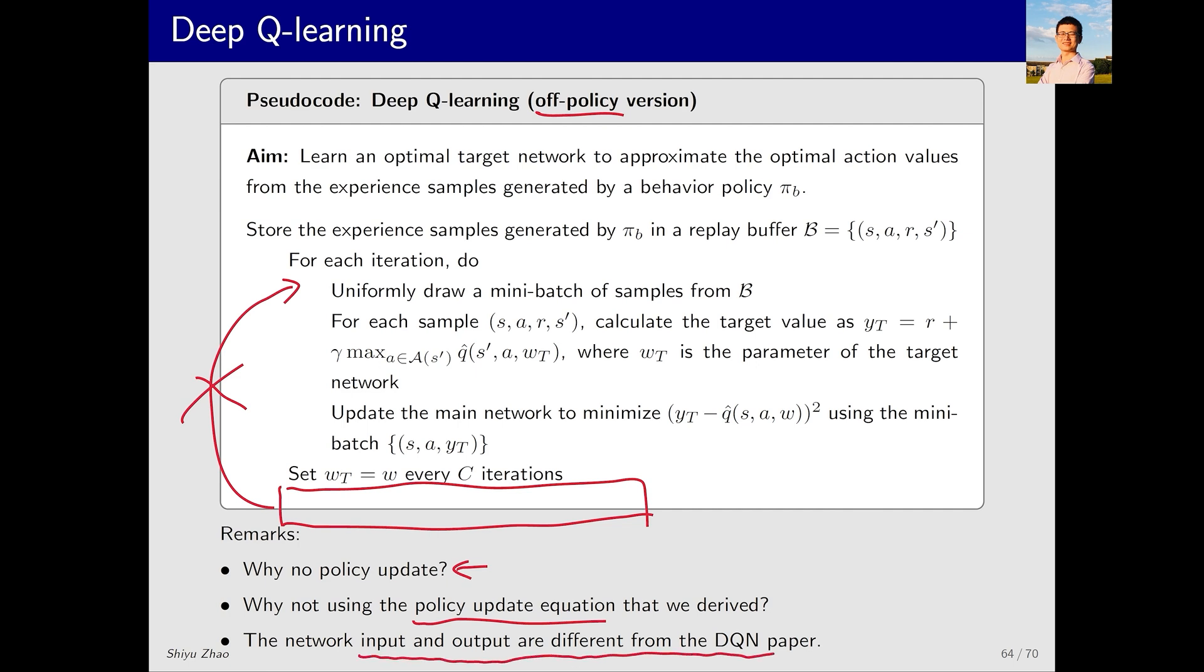Third, the input and output of our network differ from those in the original DQN paper. In addition, the original paper used an on-policy implementation, whereas here is an off-policy implementation. Don't panic. Once you understand the essence of the algorithm, you can make modifications you like without worrying that the resulting algorithm fails.